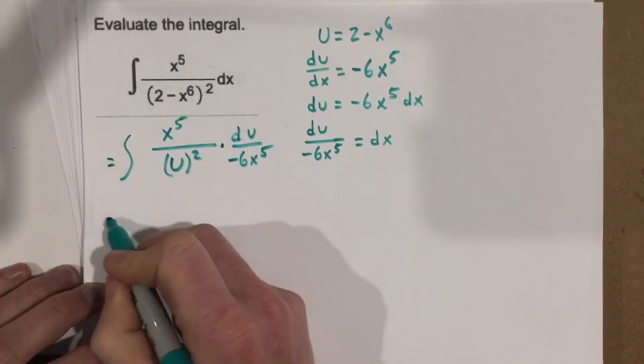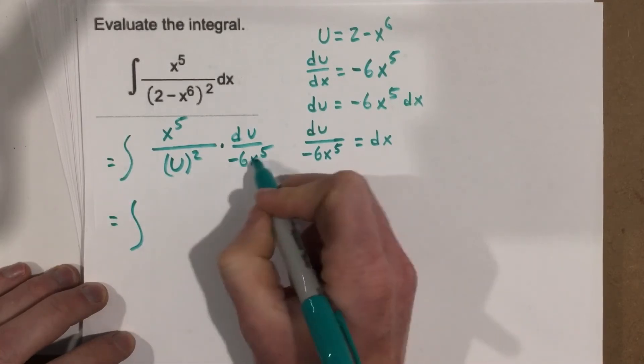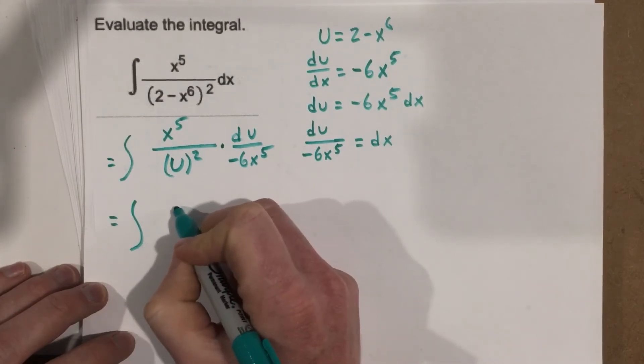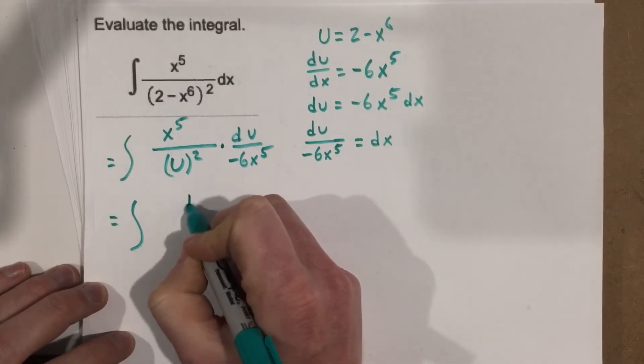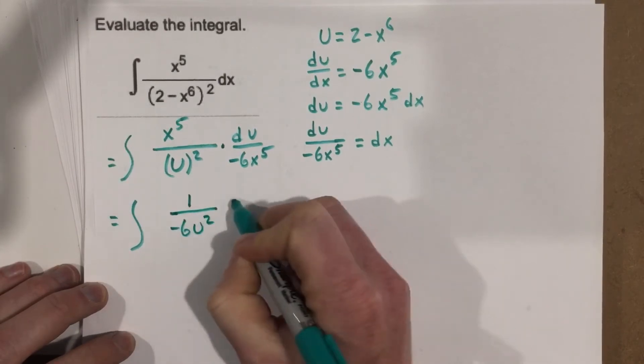So we get the integral—the x to the 5th terms cancel—so we get 1 over negative 6u squared du, or let's write this as 1 over negative 6u squared du.